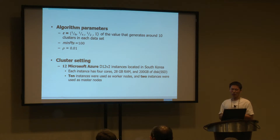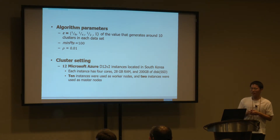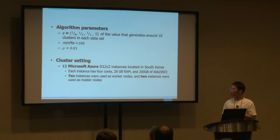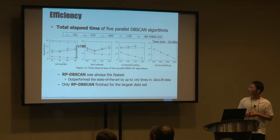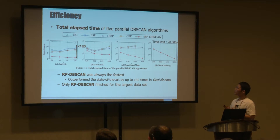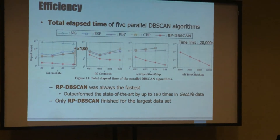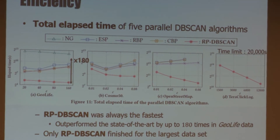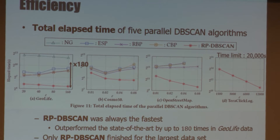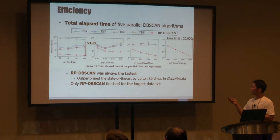All experiments were conducted on 12 Microsoft Azure instances, each with 28 GB RAM, 4 cores, and 200 GB SSD. Ten instances were used as worker nodes and two as master nodes. Our algorithm was always the fastest one. Especially on the heavily skewed dataset, our algorithm outperformed the state-of-the-art by up to 180 times. Only our algorithm finished for the largest dataset of hundreds of gigabytes.